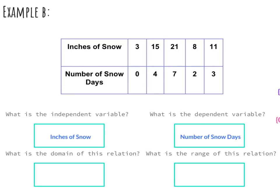The second part asks for the domain and range of this relation. The domain includes all the x values — in order from least to greatest: {3, 8, 11, 15, 21}. It's important to use braces when writing points in the functions unit to denote they are part of a set, and to list them in order from least to greatest. We'll do the same for the range — all the y values, also listed in order from least to greatest with braces.